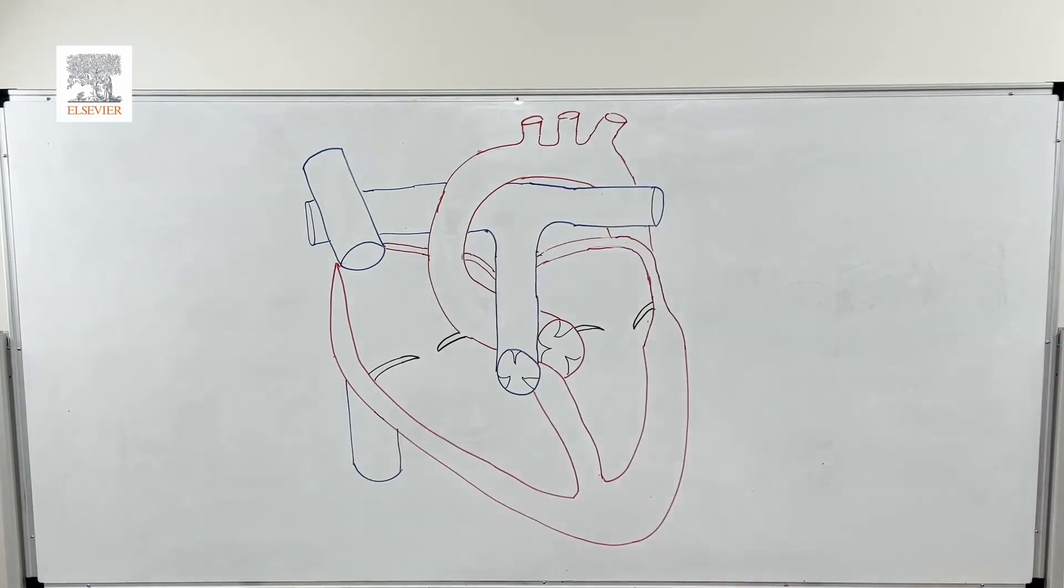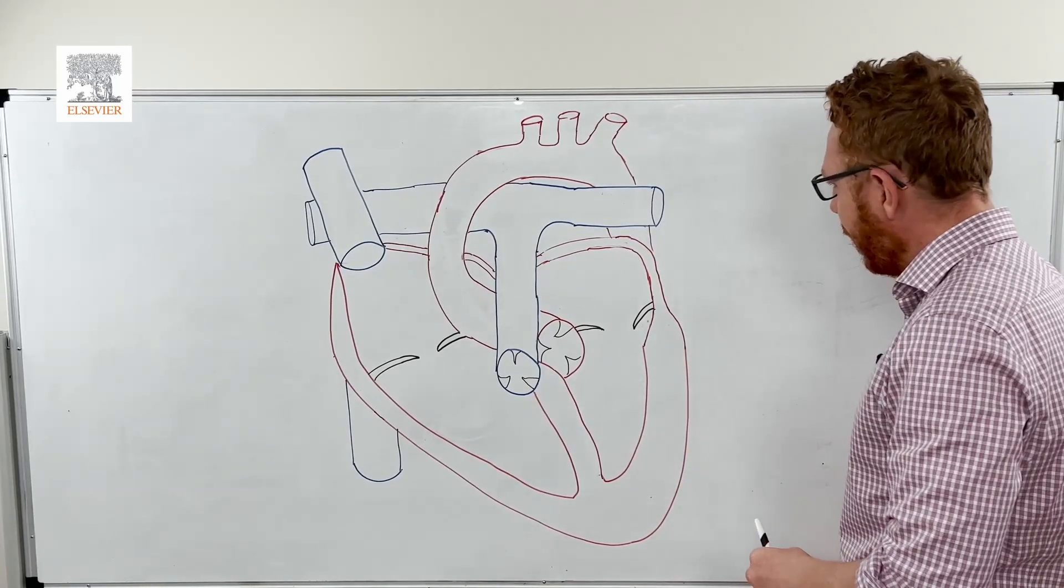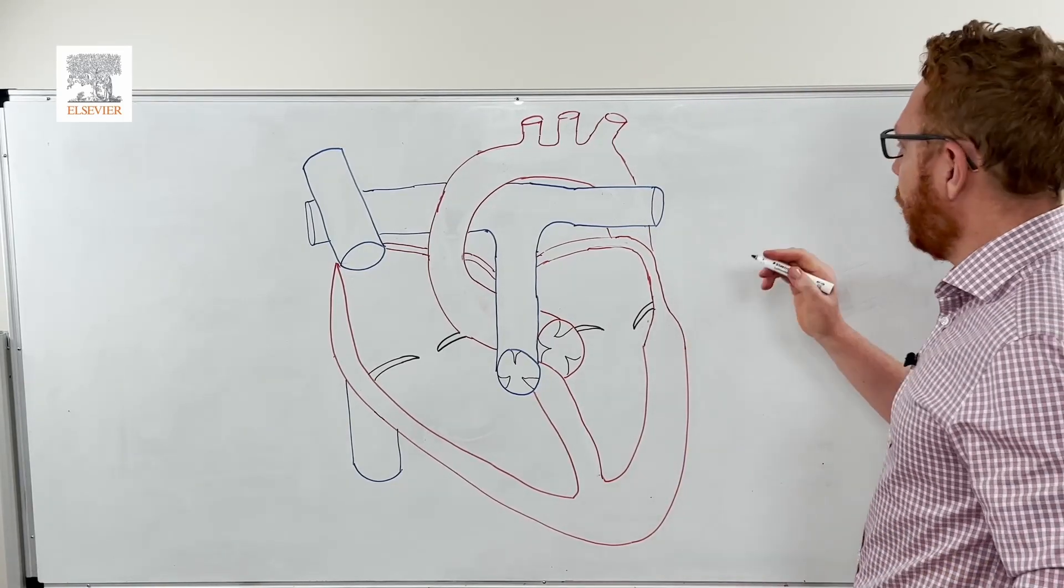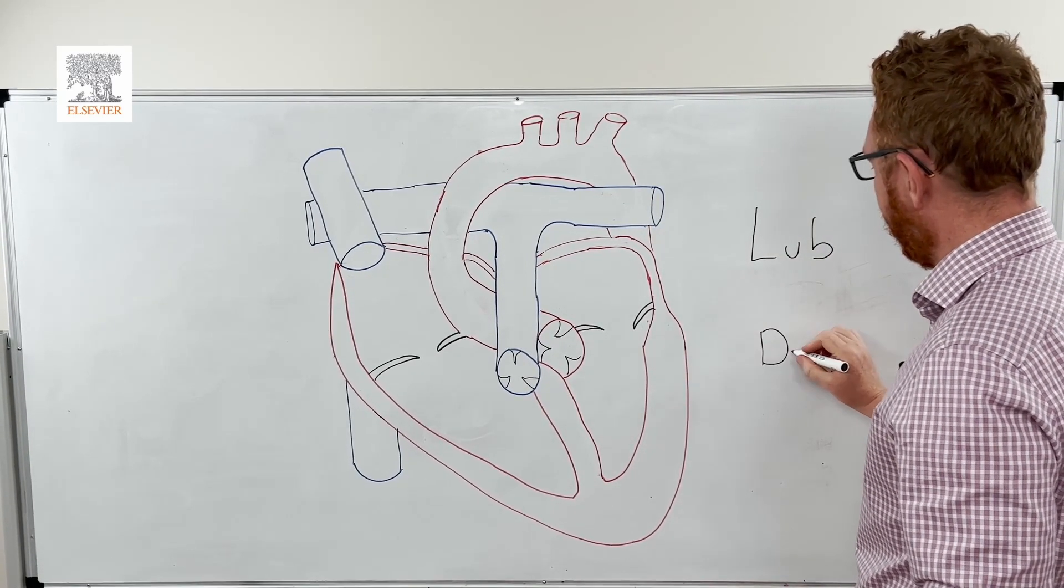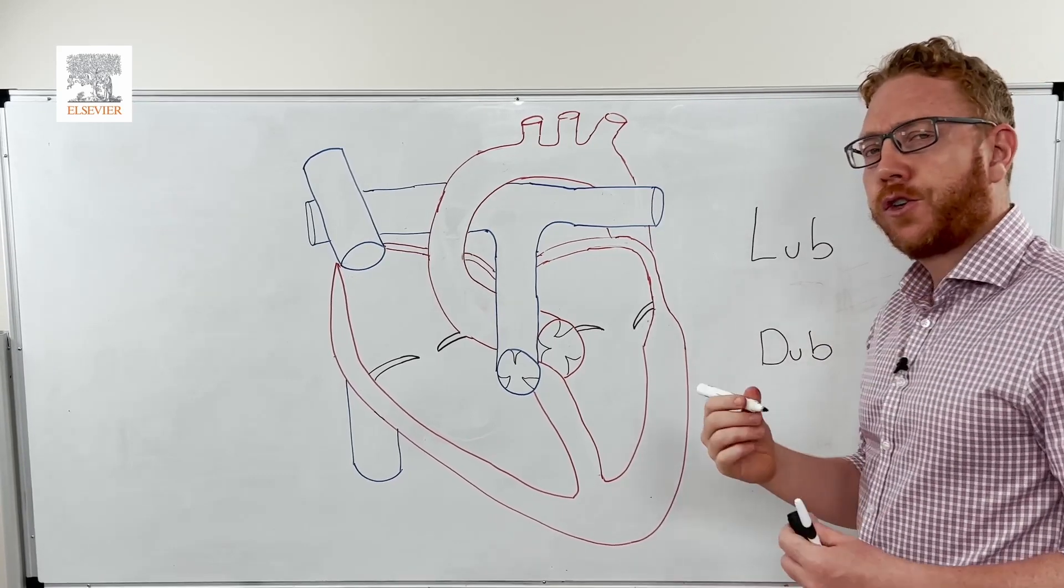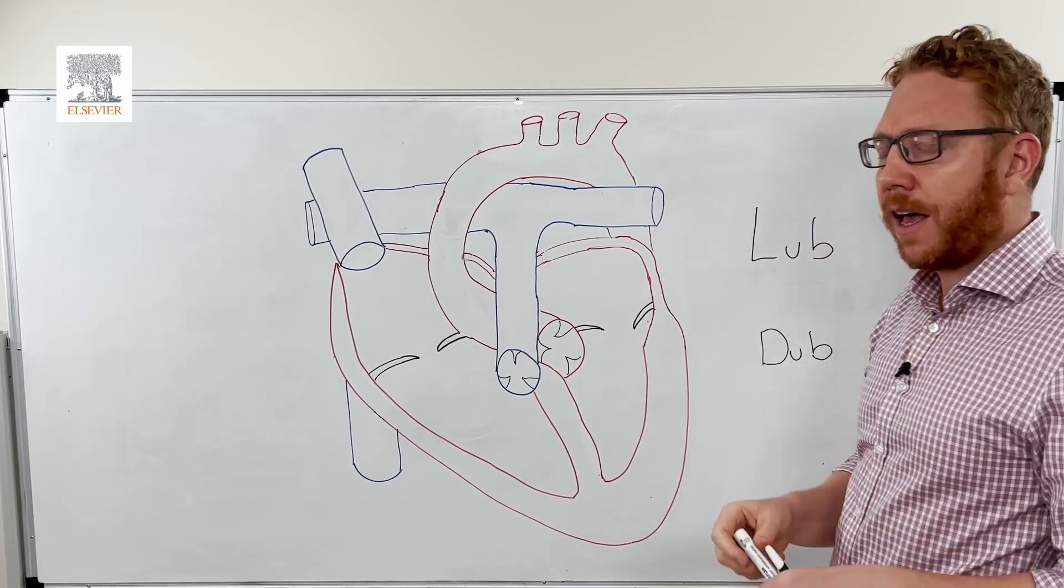All right. So hopefully, what you've heard is two sounds. These two sounds, at least what it sounded like to us, is lub, dub. So these are the two typical heart sounds that we would hear when we auscultate or listen to the heart with a stethoscope.